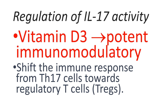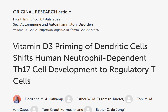Vitamin D3 is now recognized for its potent immunomodulatory functions. Vitamin D3 can restore immune balance in chronic inflammatory and autoimmune diseases by inducing tolerance, shifting the immune response from T-Helper 17 cells towards regulatory T-reg cells, thereby limiting T-Helper 17 cell development. A paper published in Frontiers in Immunology in July 2022, titled 'Vitamin D3 priming of dendritic cells shifts human neutrophil-dependent T-Helper 17 cell development to regulatory T cells,' confirms that vitamin D3 can shift the balance from the pathogenic T-Helper 17 type to regulatory T cells.